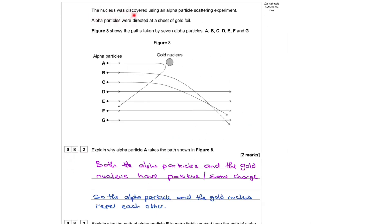8.2. The nucleus was discovered using an alpha particle scattering experiment. Alpha particles were directed at a sheet of gold leaf as shown in Figure 8.